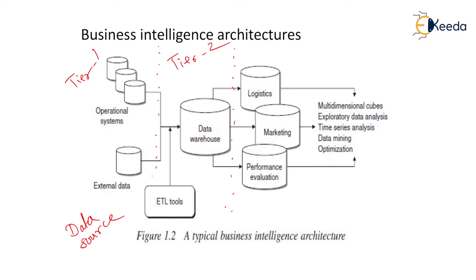Tier 2 is also called the data warehouse and data mart. Whatever heterogeneous data we get from Tier 1, we arrange it in a proper format for decision-making. For example, consider a supermarket: when you enter, all products are properly arranged so you don't need to ask any employee where a product is — you can just walk and find each product arranged in a proper manner.